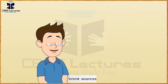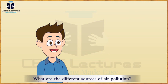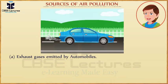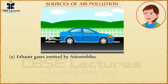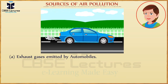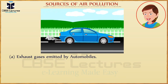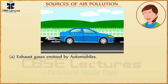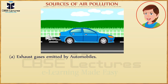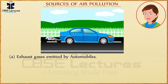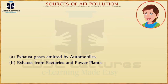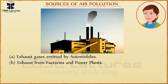What are the different sources of air pollution? First, exhaust gases emitted by automobiles. Most automobiles use fossil fuel. Burning of fossil fuel releases carbon dioxide and carbon monoxide. Second, exhaust from factories and power plants.